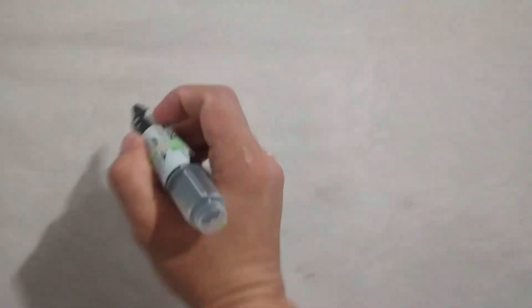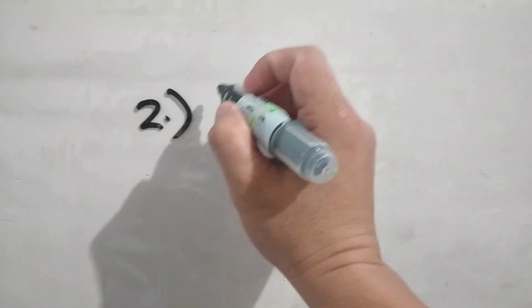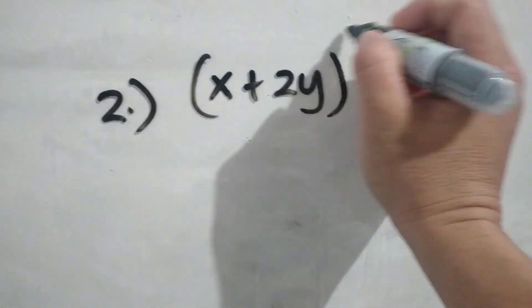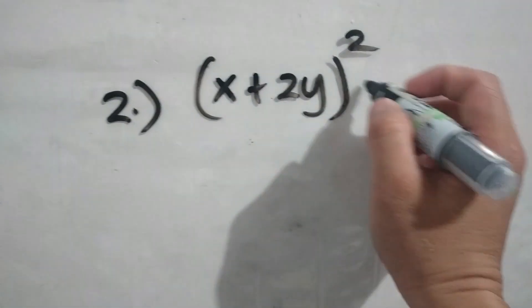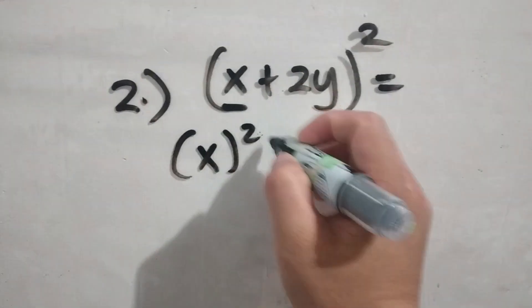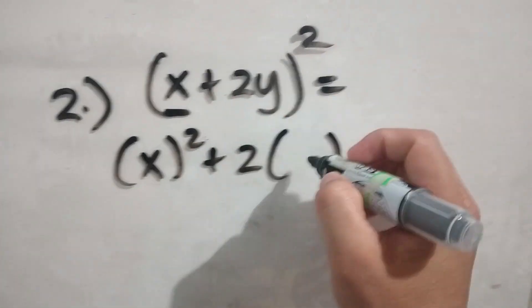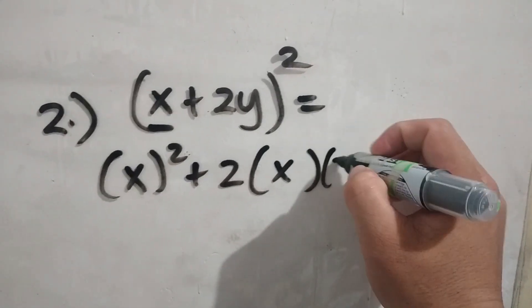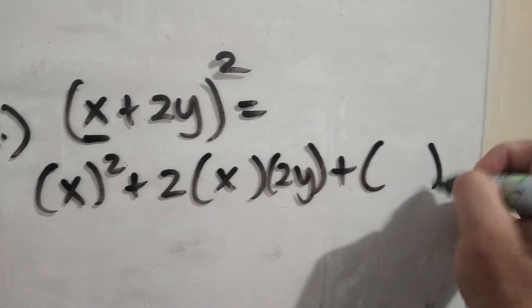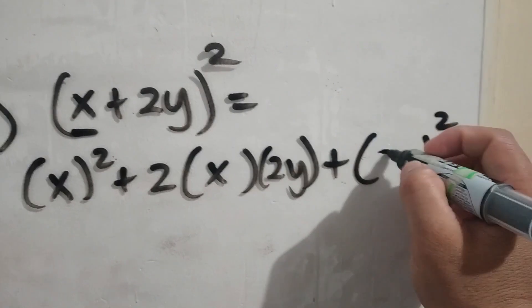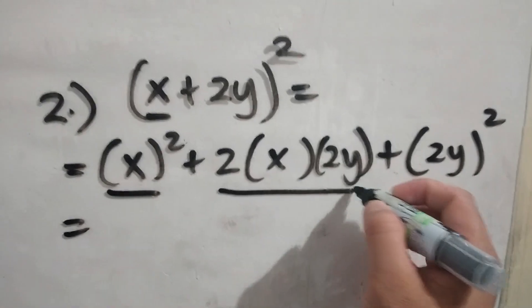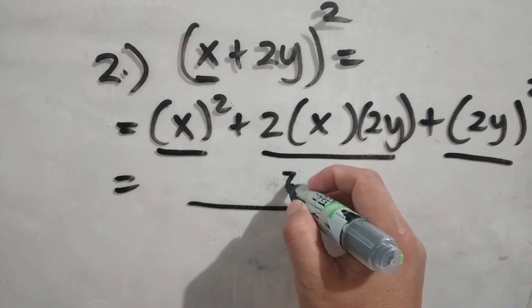Number two. The square of x plus 2y. Again, the square of x plus 2y. Now remember, the square of binomial, wherein we have a technique on how we are going to get the product. Simply, square the first term, plus twice the product of the second term, plus square the last term. And that will be the product.